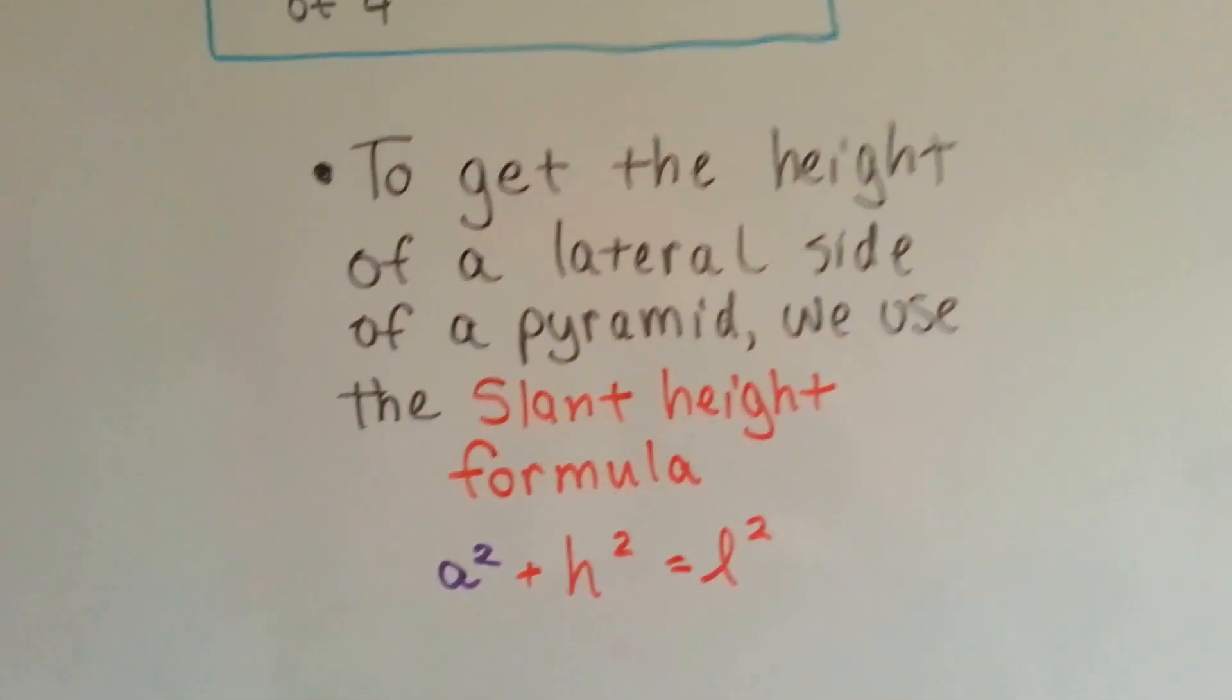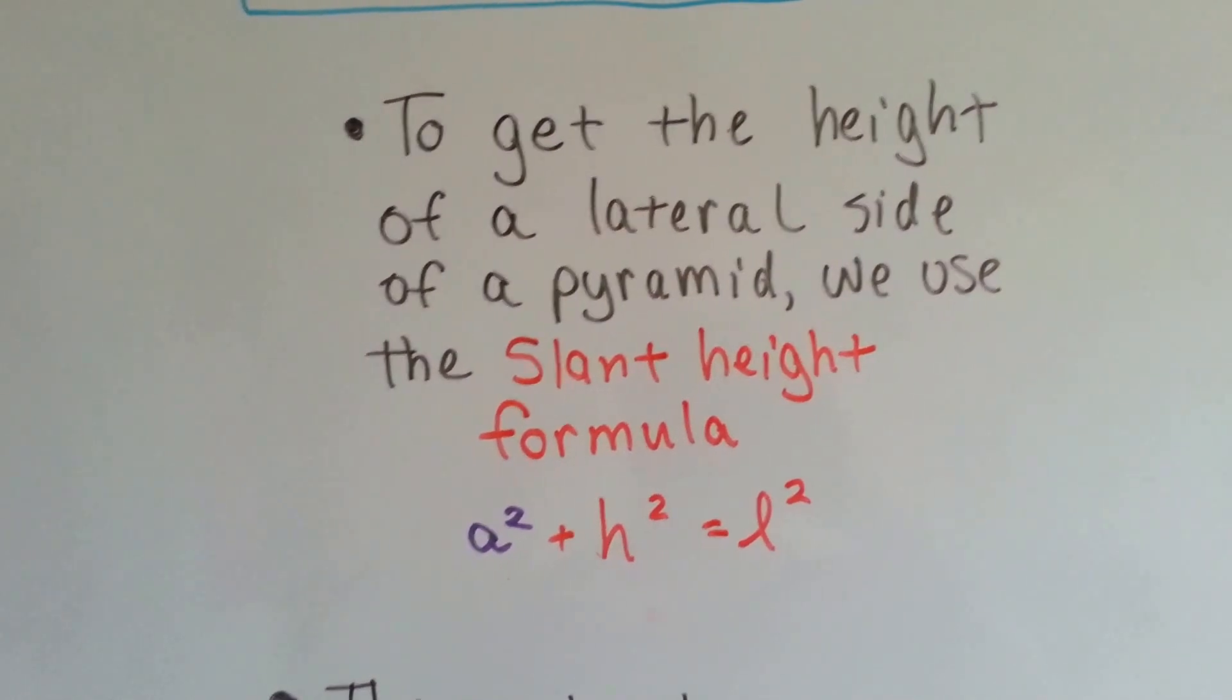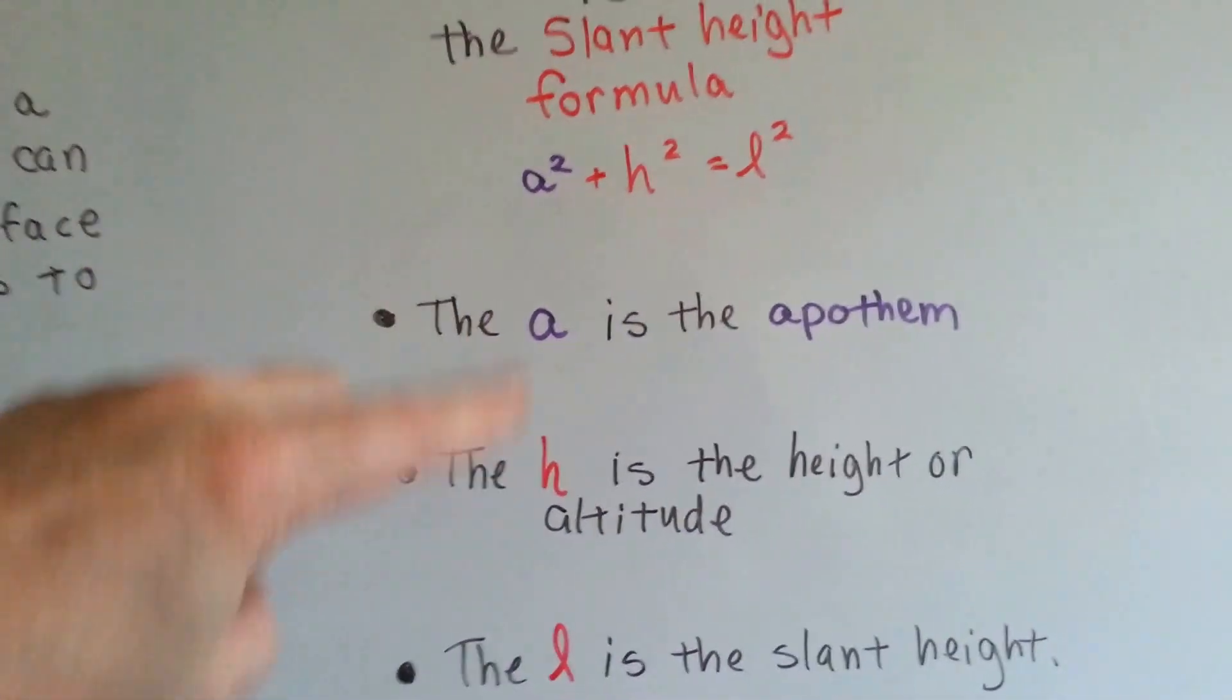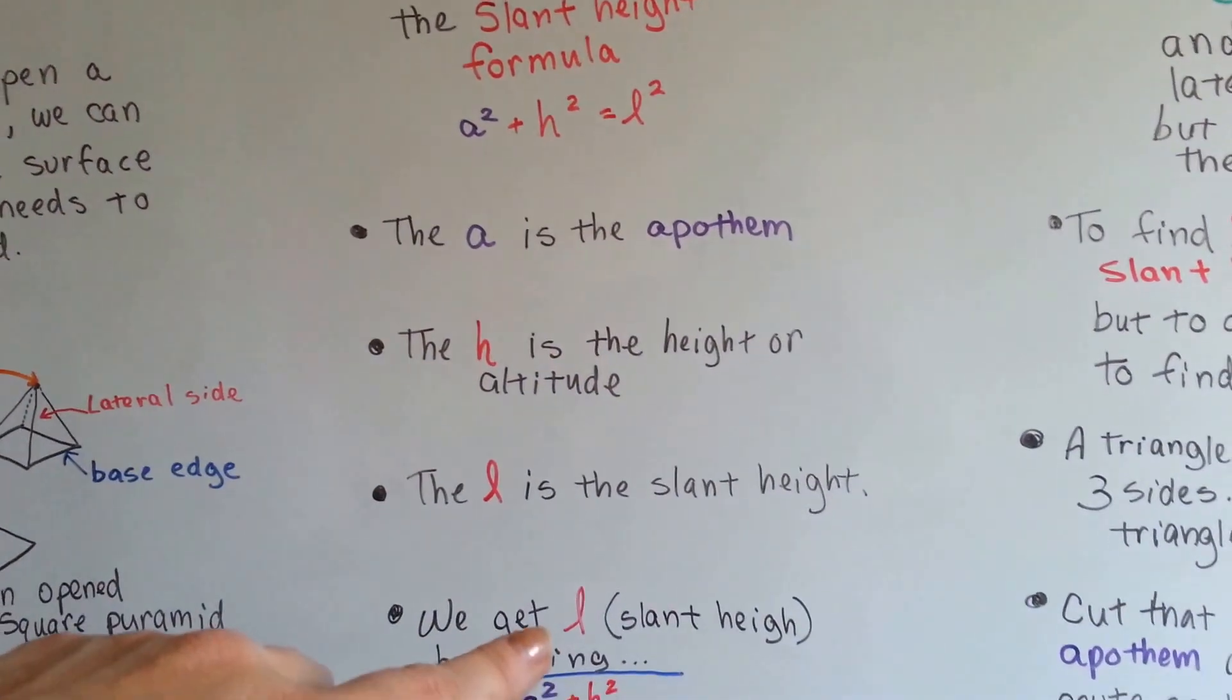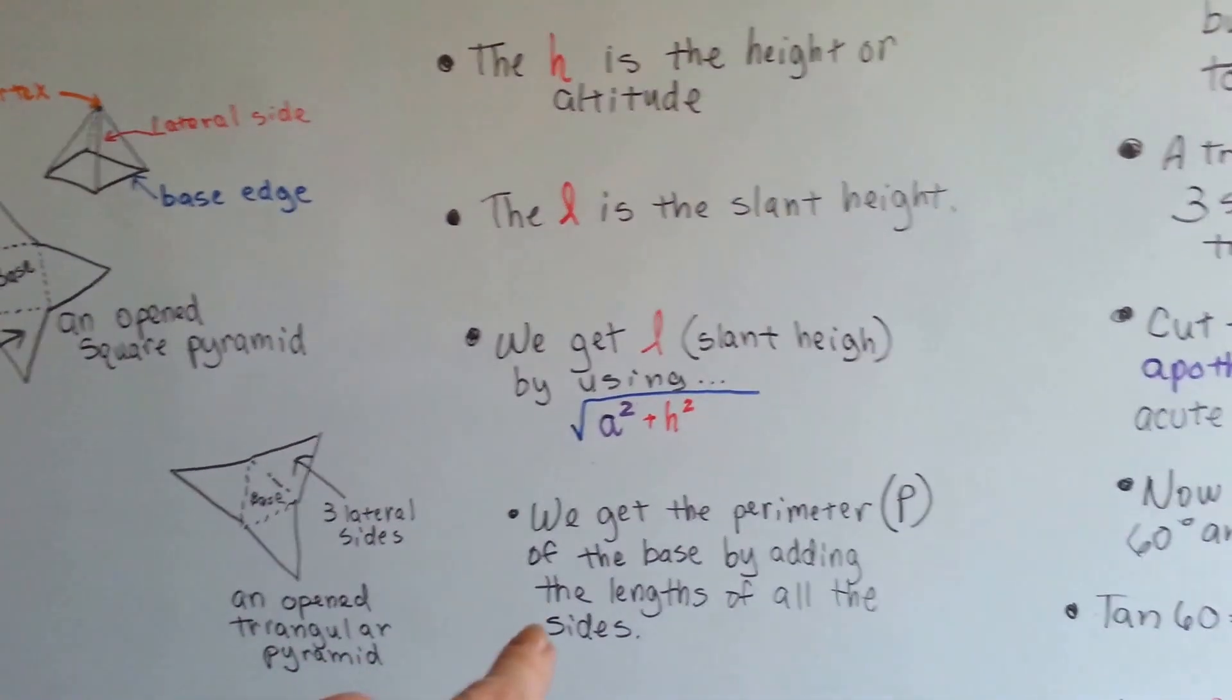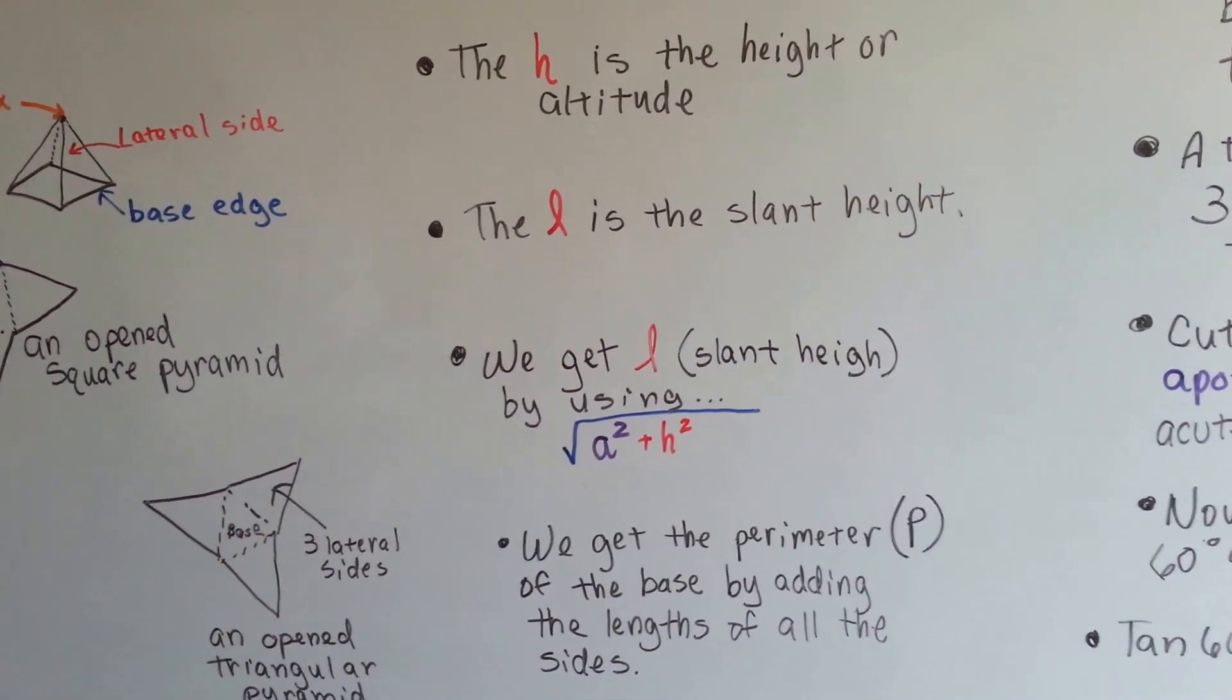To get the height of a lateral side of a pyramid, we need to use the slant height formula, which is this: a squared plus h squared equals l squared. The a is the apothem, the h is the height or the altitude, and the l is the slant height. We get the slant height by using the square root of a squared plus h squared. We get the perimeter by adding up the three sides of the triangle.